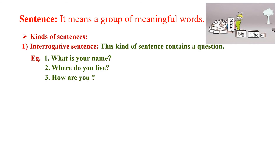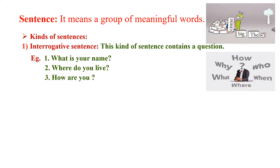There are different kinds of sentences. The first is the interrogative sentence. This kind of sentence contains a question like how, why, who, what, when, and where. For example: 'What is your name?' 'Where do you live?' 'How are you?'